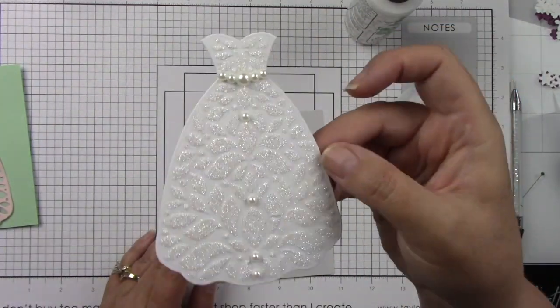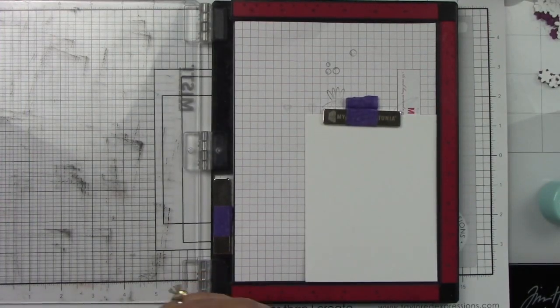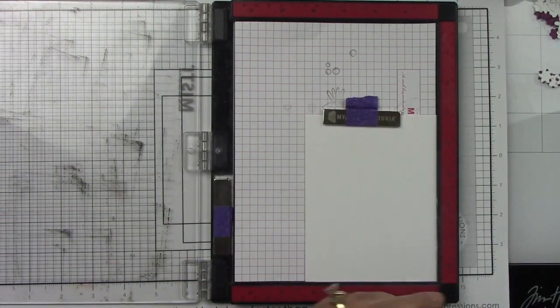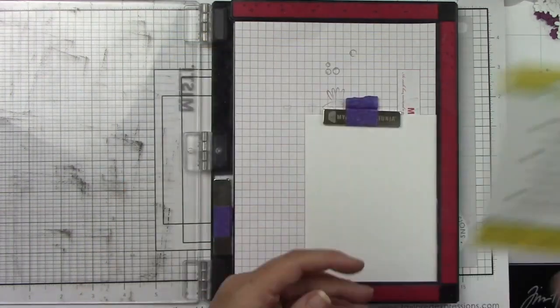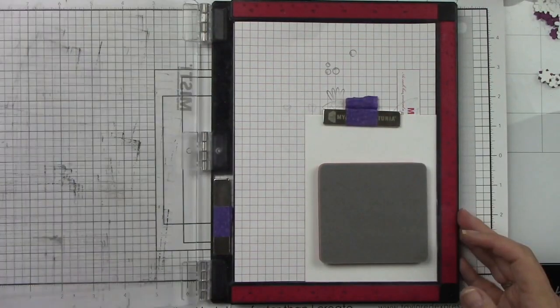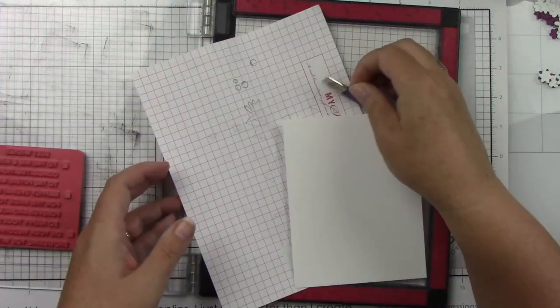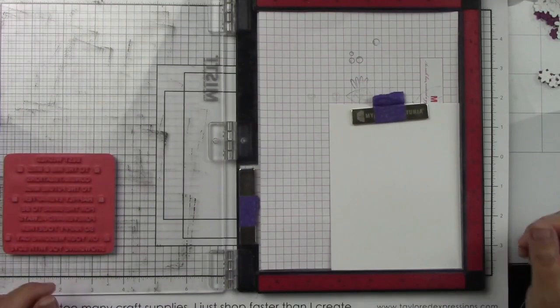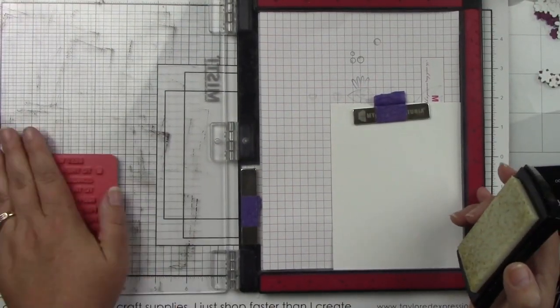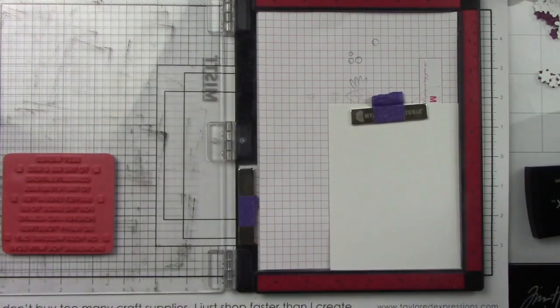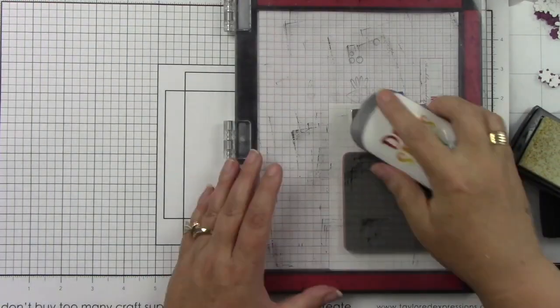So let's just finish getting those glued down. Now I want to do the sentiments and this is from the Mini Strips Wedding. So I have my piece of Sugar Cube cardstock. I'm going to prep that with my anti-static powder tool. I want to do some gold heat embossing. I just thought that gold would just be classic with these cards.